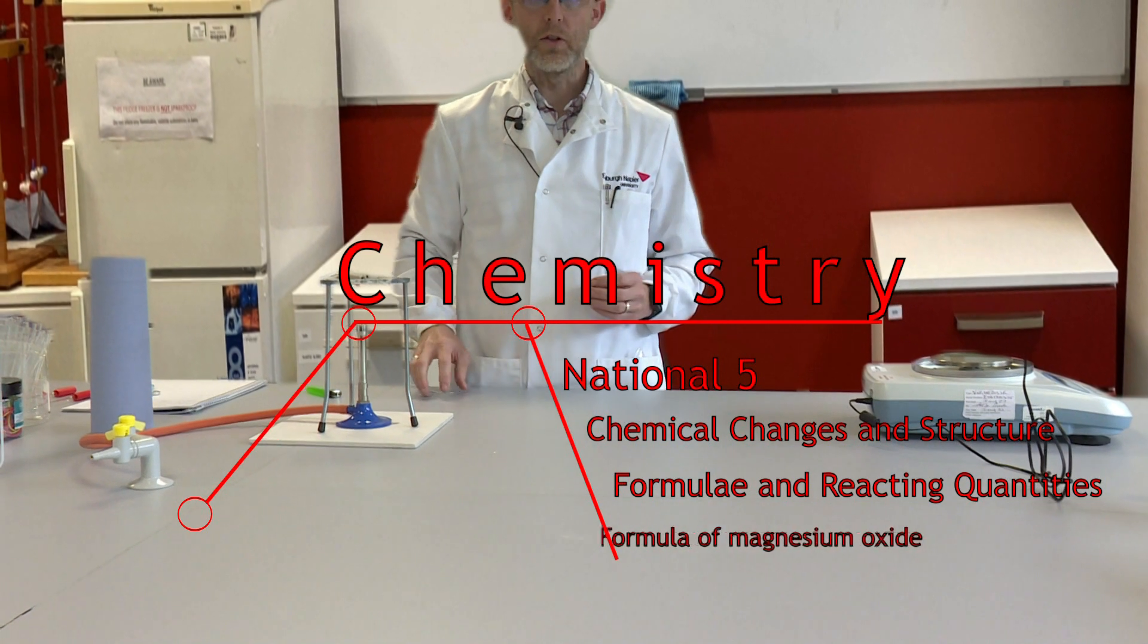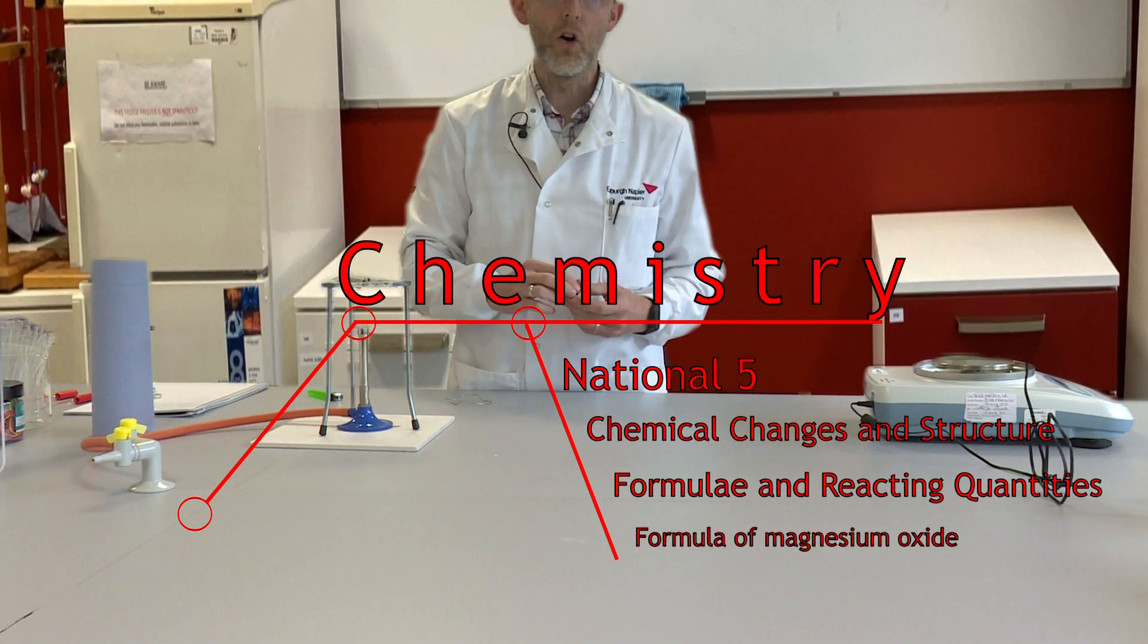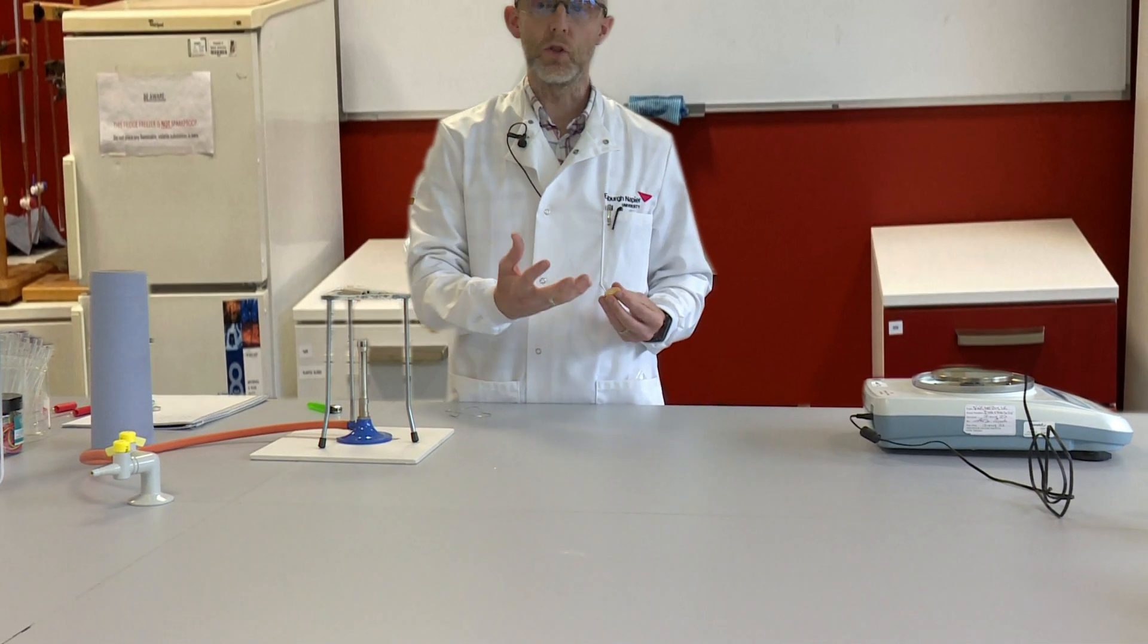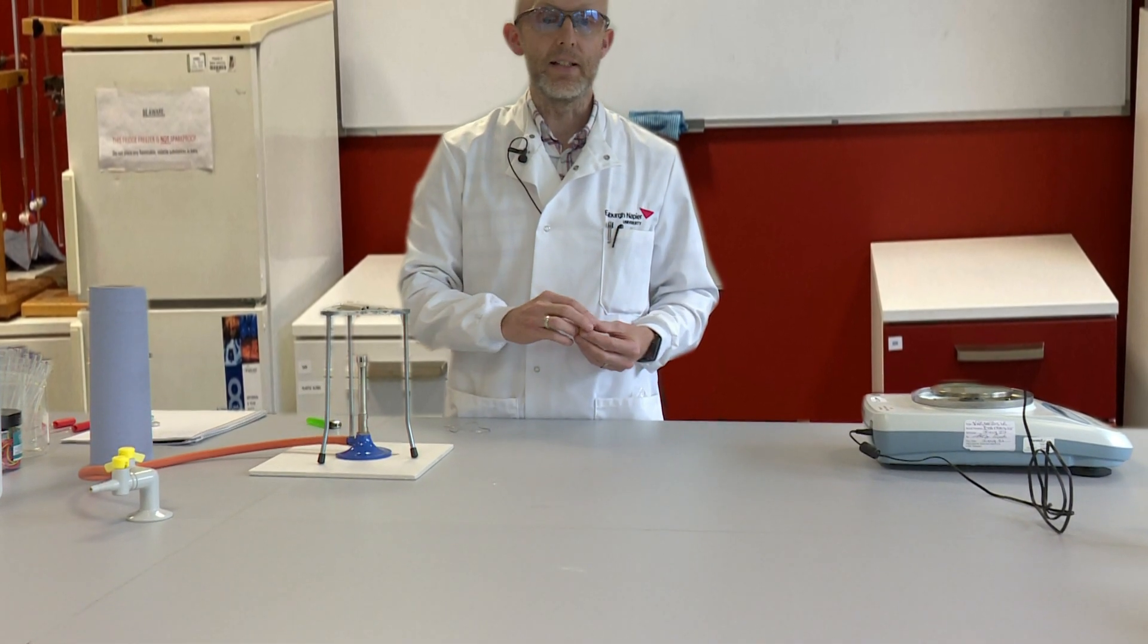So in this experiment we're going to work out the formula of magnesium oxide. We're going to take some magnesium and we're going to roast it in air to form magnesium oxide.